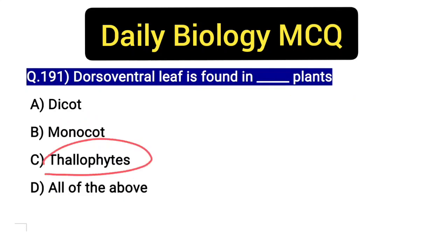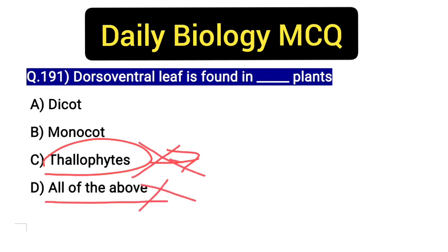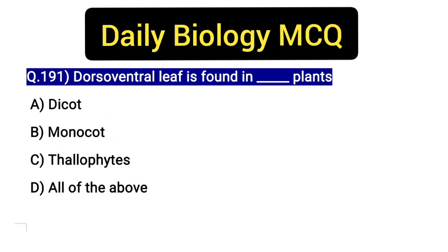Thallophyta are all plants that do not have true roots, stem, and leaf. So this option is eliminated, which means 'all of the above' is also eliminated. We are left with two options: dicot and monocot.